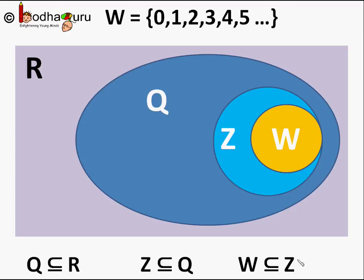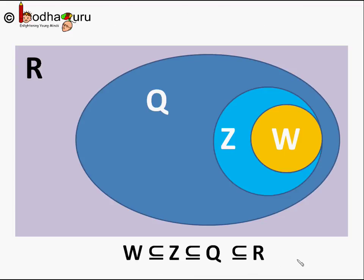This also means set W is a subset of set Z, and set Z is a subset of set Q, and set Q is a subset of set R. So we can also say set W is a subset of R. Any possible subset of numbers we come across is actually a subset of the universal set R.